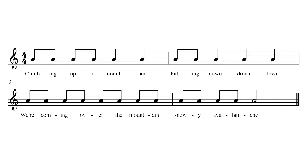The children will need to come up with their rhythms themselves, which they will then keep repeating. However, if they do get stuck you can give them these sentences to help: 'Climbing up a mountain', 'Falling down, down, down', 'We're coming over the mountain', 'Snowy avalanche'. Once they can speak the rhythms they can move on to playing them on an untuned percussion instrument.